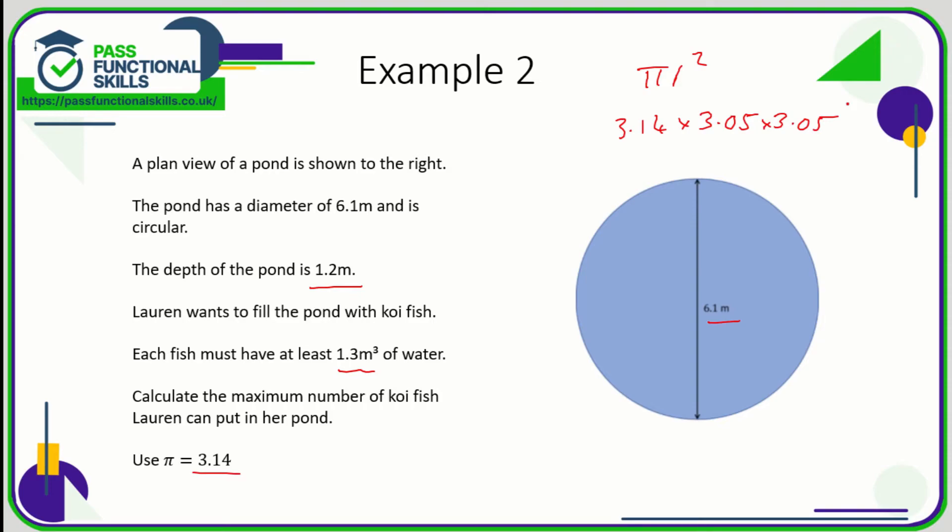The area of this circle is going to be 29.20985 meters squared, and for the volume we just need to multiply that by 1.2.